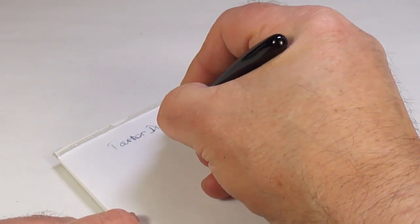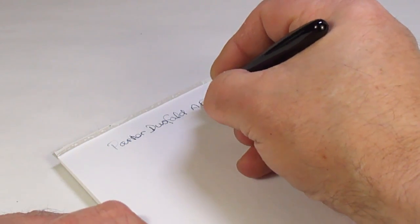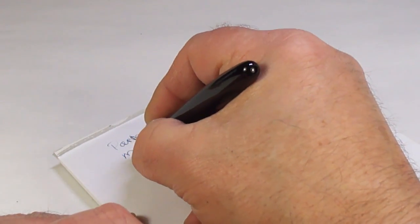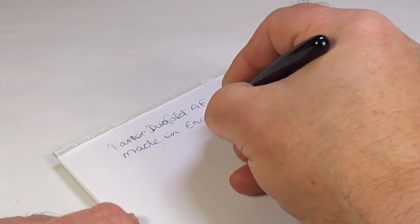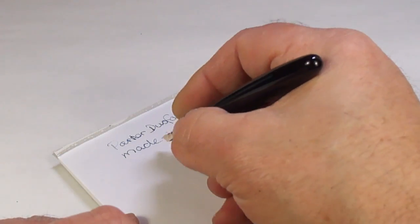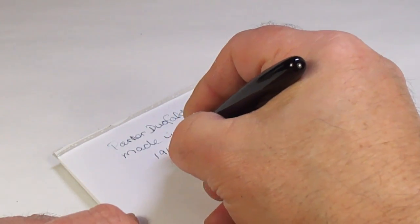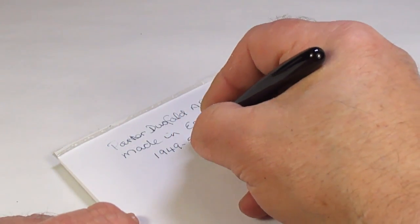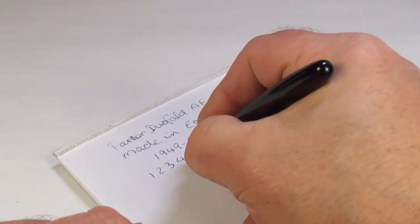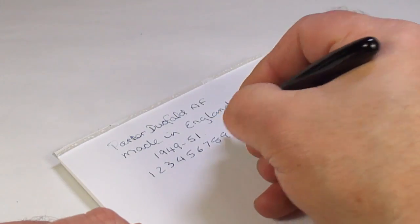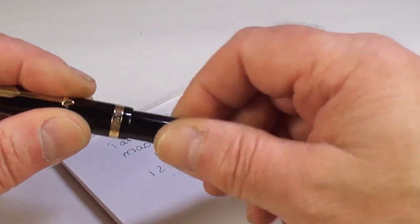A Parker Duofold, it's an AF or aluminum filler, made in England, made around 1949 through to 1951. As you can see it's writing with a fine line. So there we have it, that's the Parker Duofold.